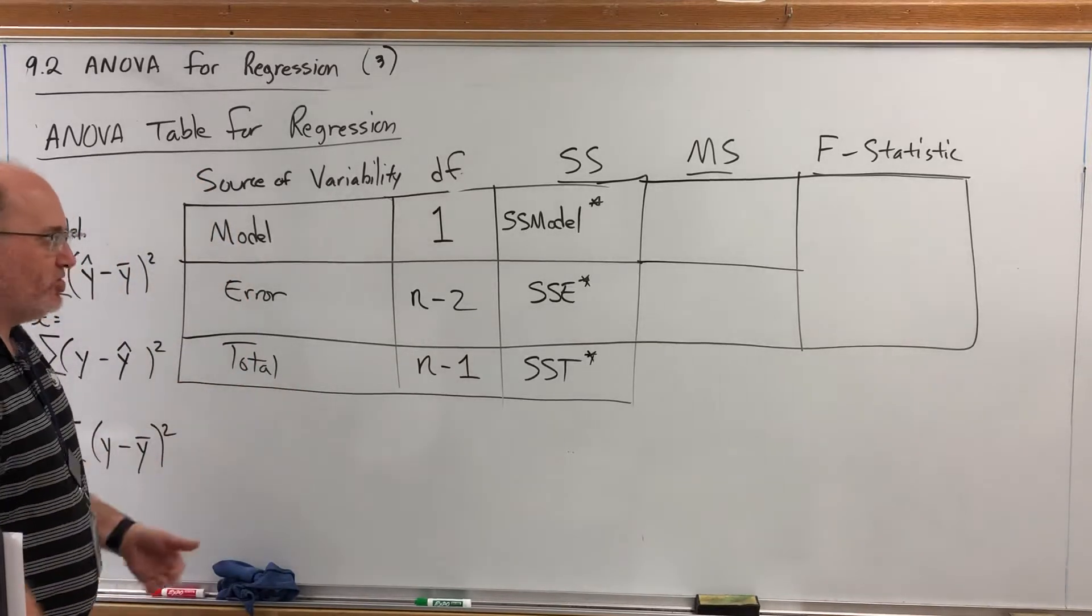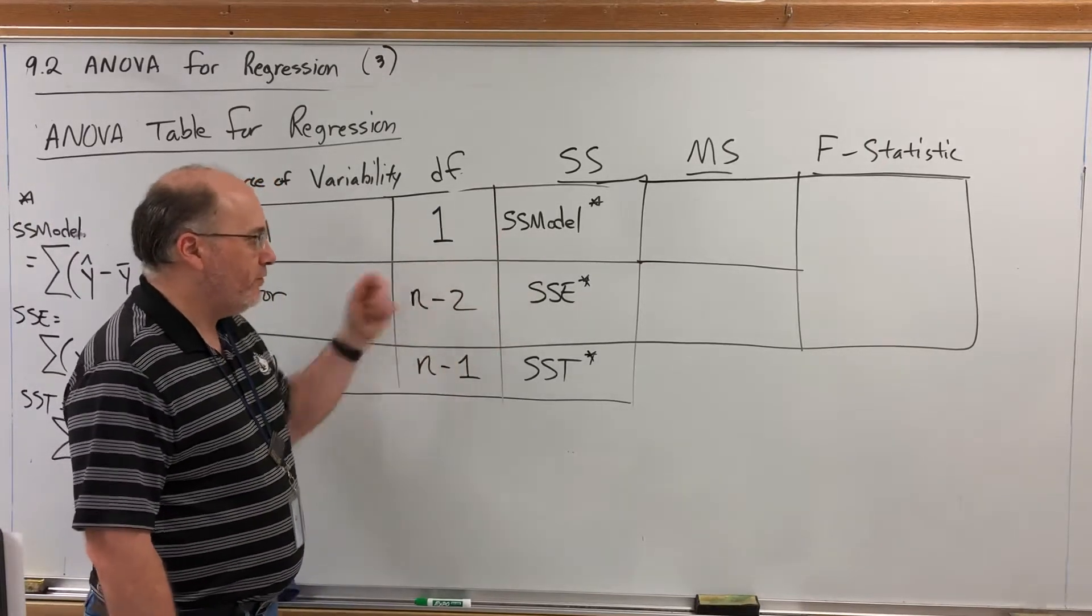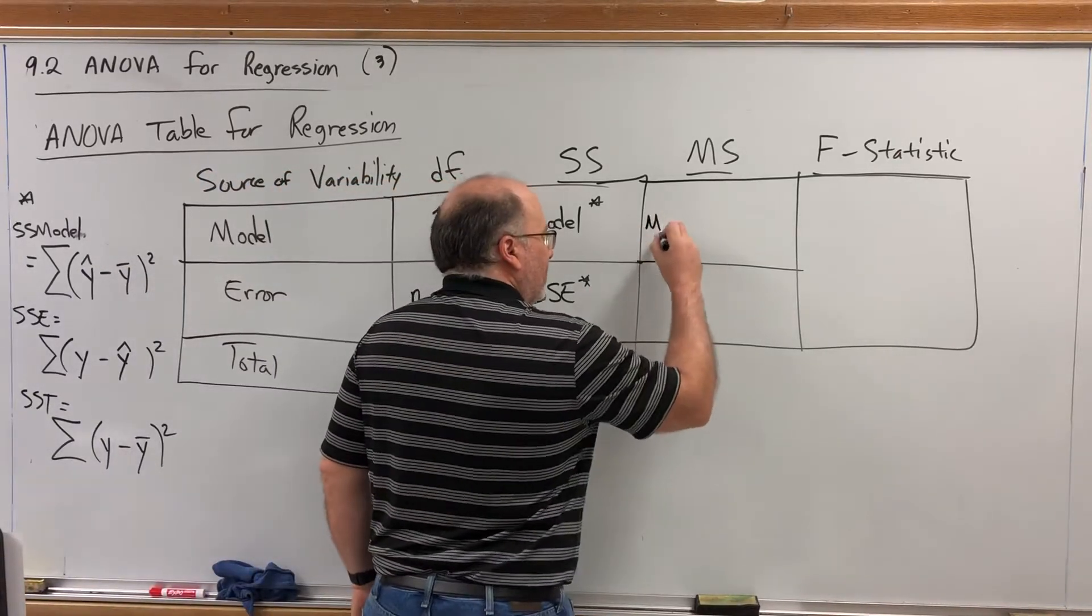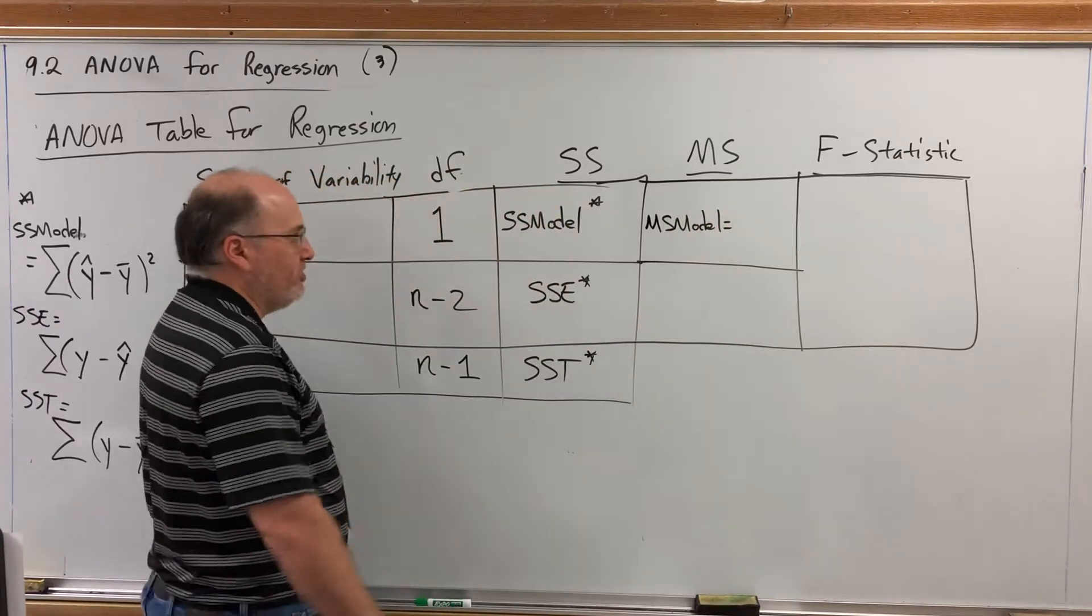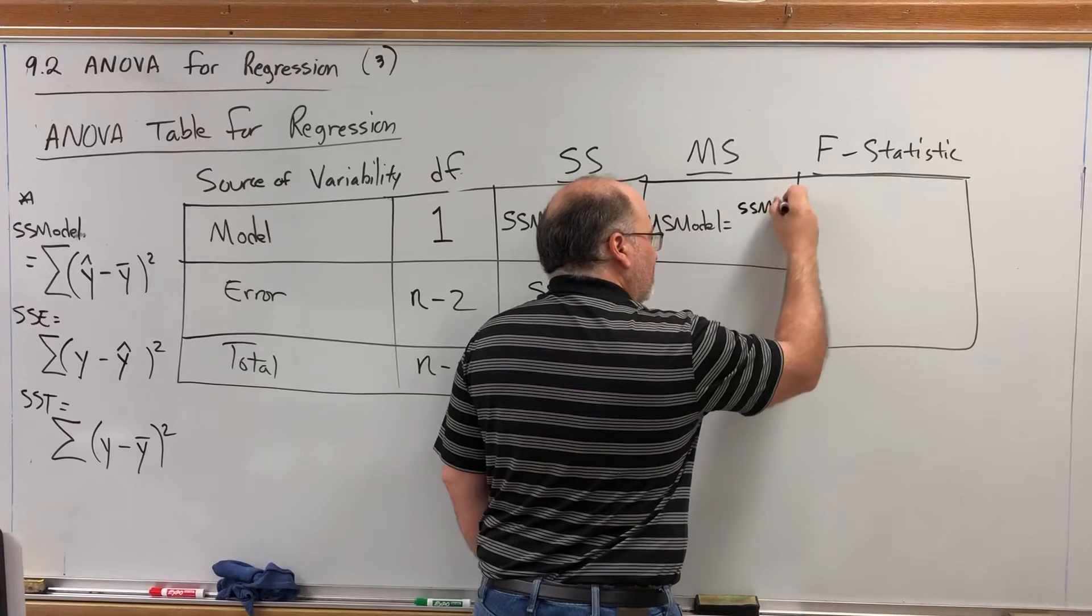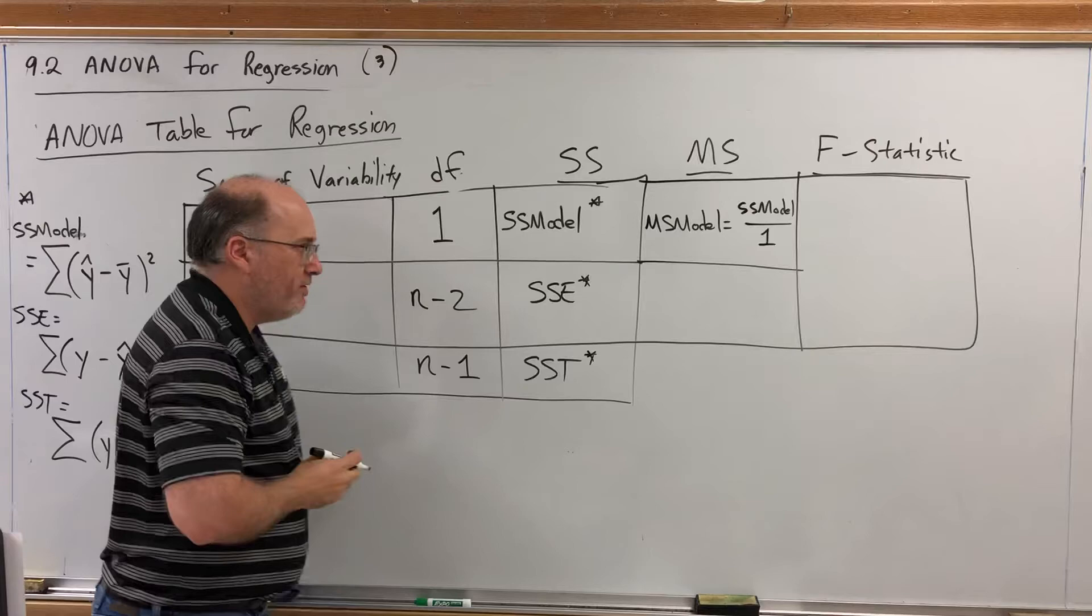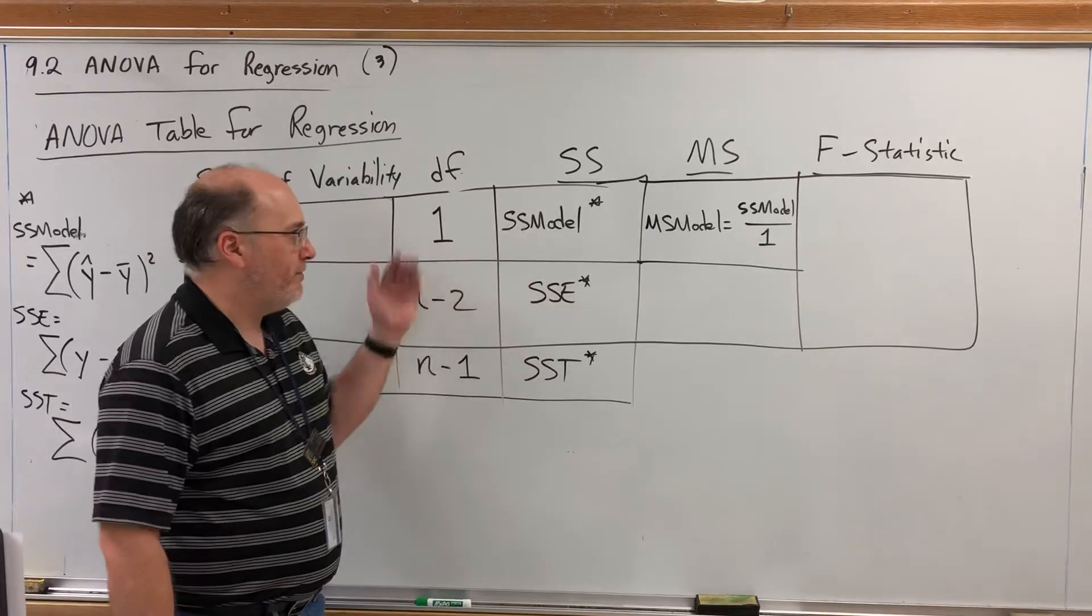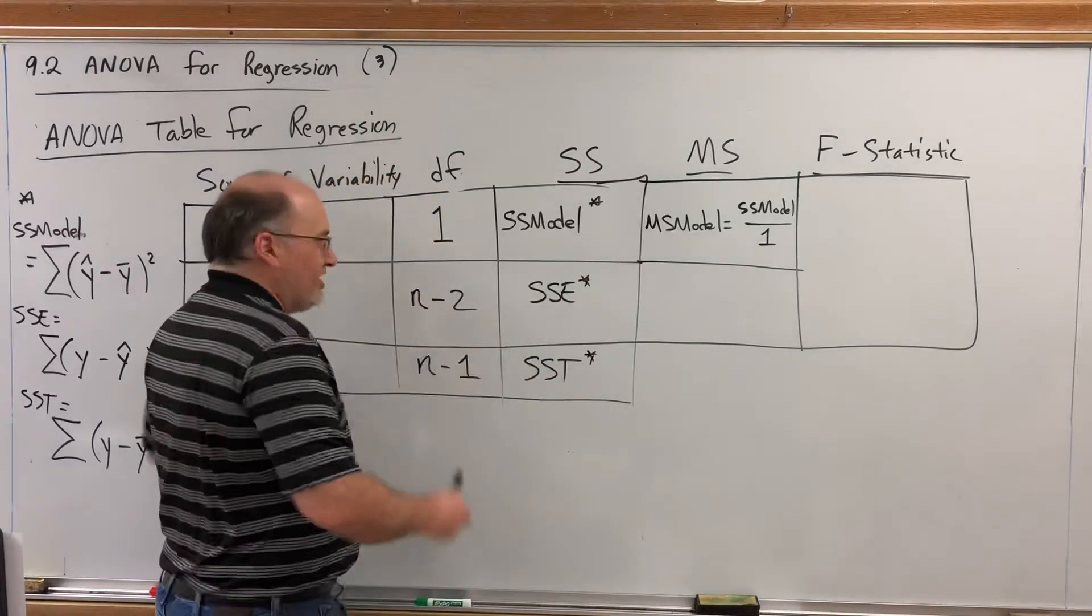The rest of the ANOVA table completes just like it did before. It's not really fair to compare these two based on their degrees of freedom. So we scale them down based on their degrees of freedom. To find the mean square sum for the model you just take the sum of the squares from the model and divide it by its degrees of freedom. But of course its degrees of freedom is one. Sum of squares divided by degrees of freedom gives mean sum of squares.